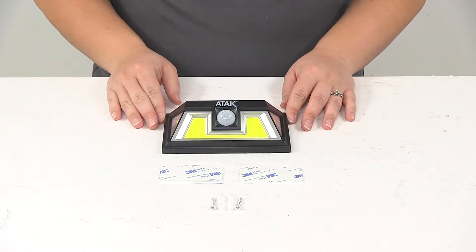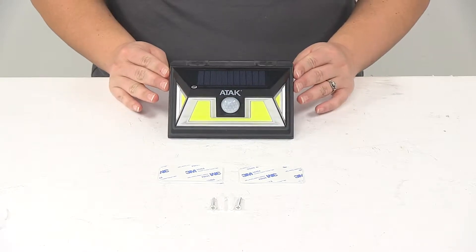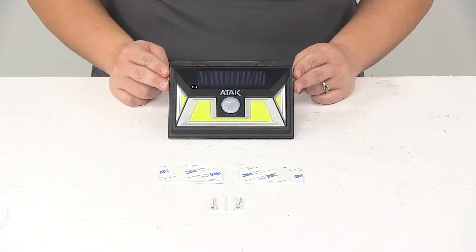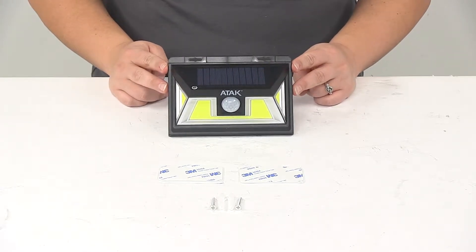Today we're going to be taking a look at the Performance Tool ATAC solar motion light. This is a weatherproof light and it has a max output of 460 lumens.